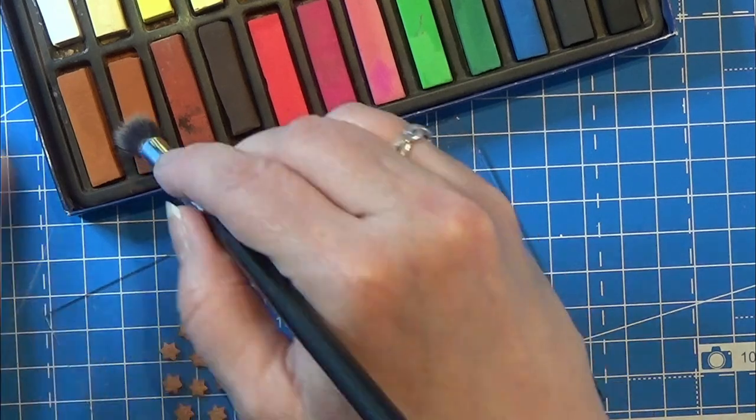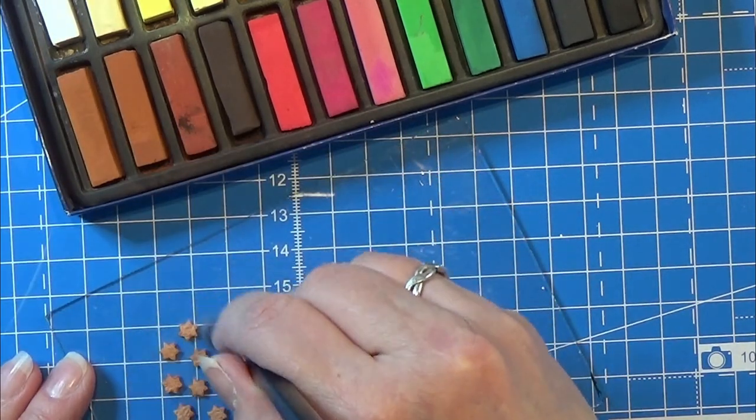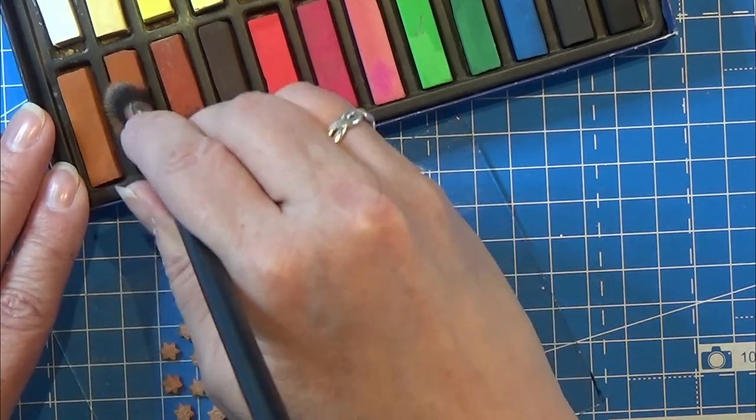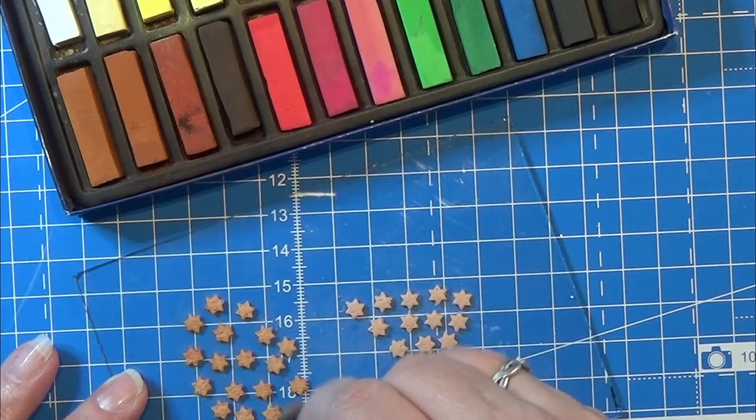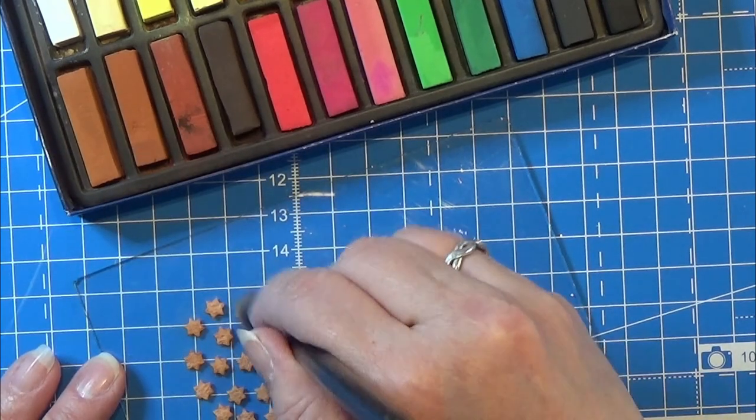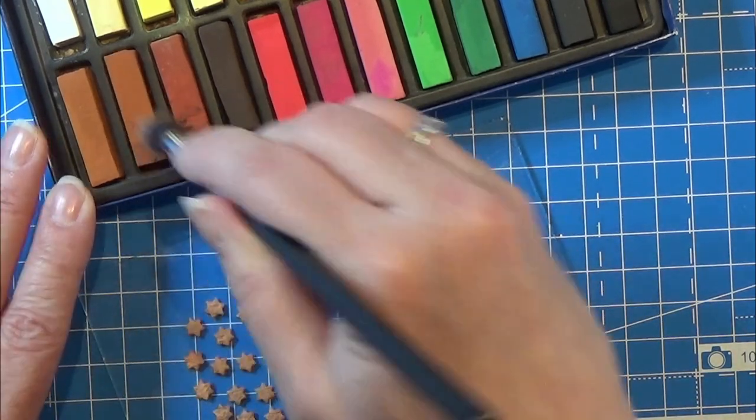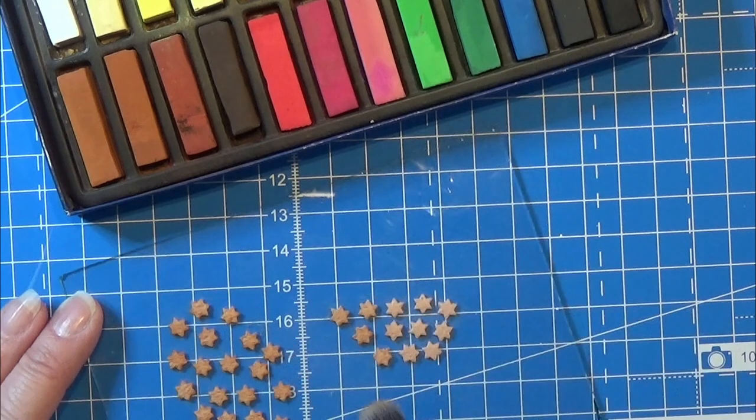So I'm just going to do this all over these small cookies. I am using a tiny bit of the darker brown as well to make them really look nice and baked.